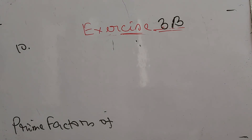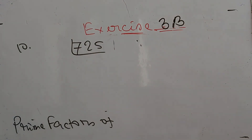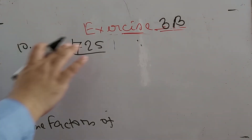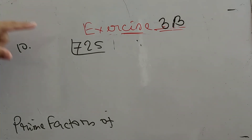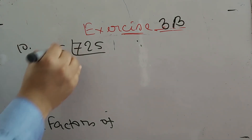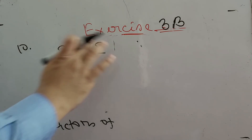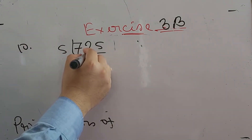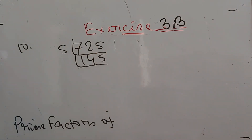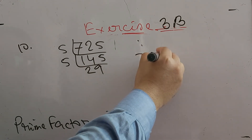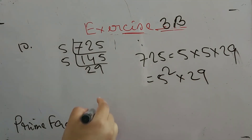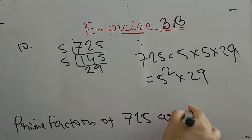Number ten: express 725 in its prime factors. Since this is an odd number, we divide by an odd prime. The digit sum is 7 plus 2 plus 5 equals 14, which is not divisible by 3, so we cannot divide by 3. The unit digit is 5, so we can divide by 5. 725 divided by 5 is 145; 145 divided by 5 is 29. So 725 means five into five into twenty-nine, that is five squared into 29. Prime factors of 725 are 5 and 29.